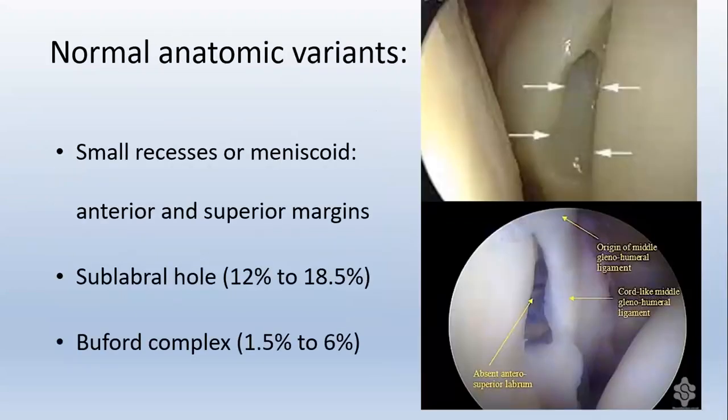Normal anatomic variations include a small recess or meniscoid type in either the anterior or superior margins. There is also a sublabral hole, which can be a complete or partial separation in 12% to 18.5% of cases. It can also present as a Buford complex, where the middle glenohumeral ligament is cord-like.